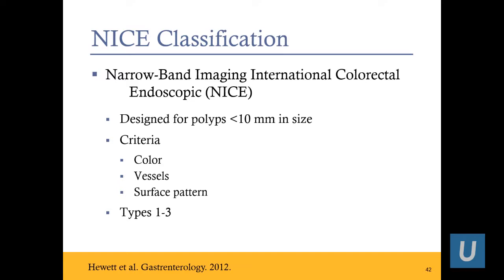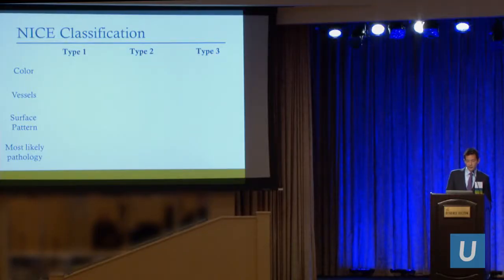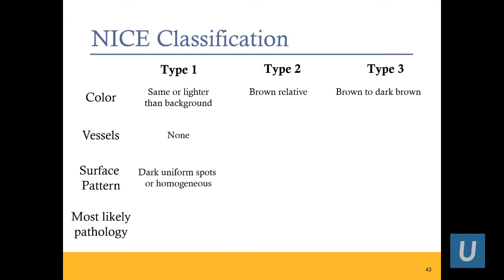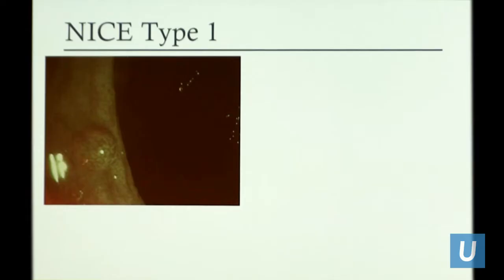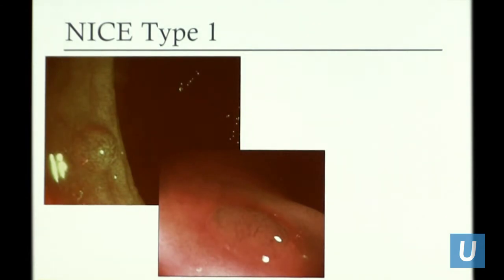The more clinically useful classification is the NICE classification — Narrow Band Imaging International Colorectal Endoscopic classification — designed for polyps less than 10 millimeters, based on color, vessels, and surface pattern. Type 1: the polyp has the same or lighter color than background, no visible vessels, dark uniform spots or homogeneous surface pattern — most likely a hyperplastic polyp. Sometimes you don't even need narrowband imaging for hyperplastic polyps, but this classification helps when you're in the rectum deciding: is this hyperplastic or an adenoma?